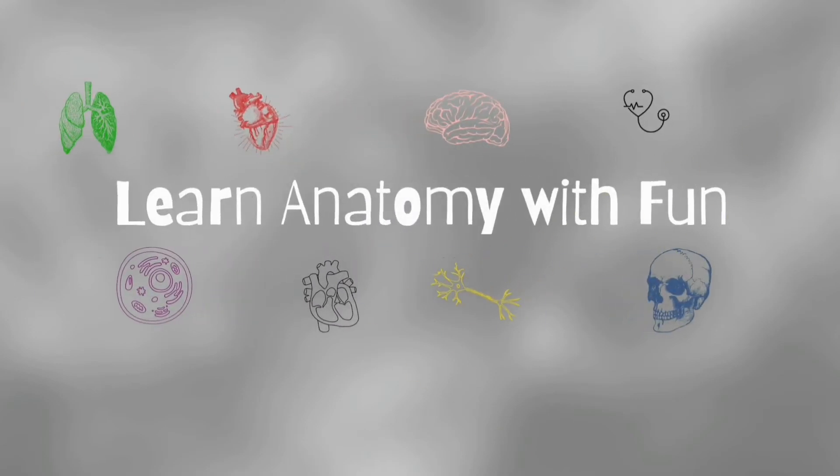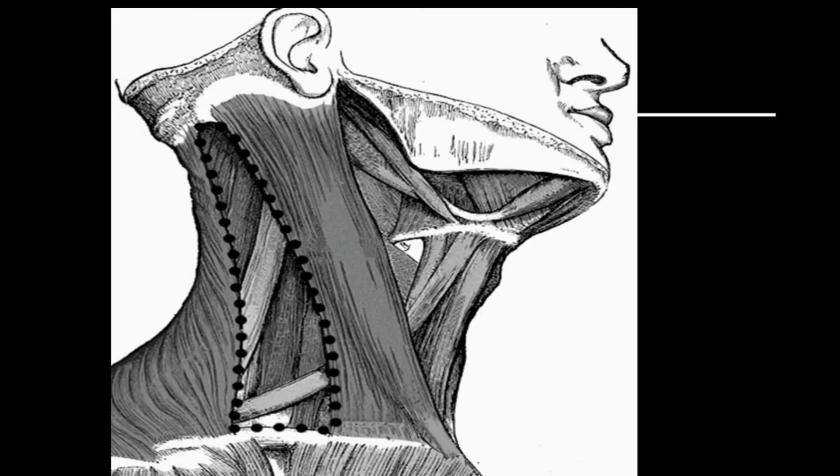Hello friends, let us see how to do the posterior triangle in exam. It is bounded anteriorly by the posterior border of the sternocleidomastoid, posteriorly by the trapezius, below by the medial one-third of the clavicle.